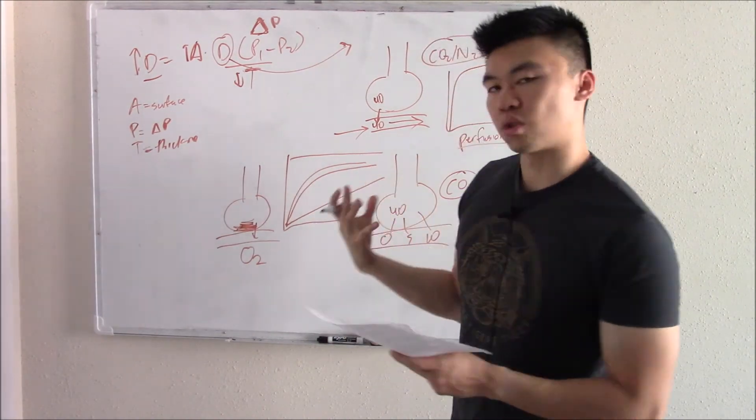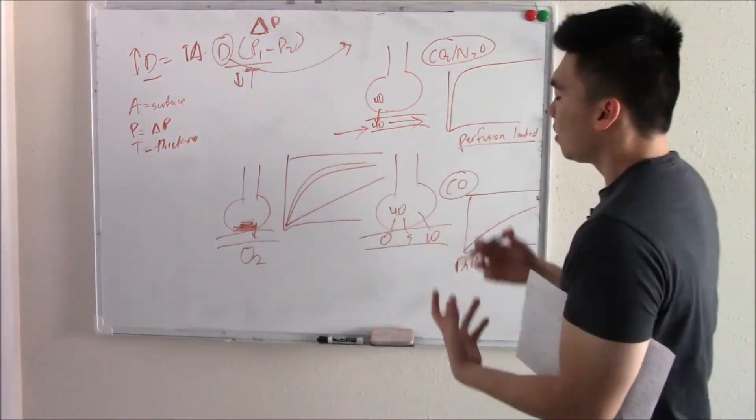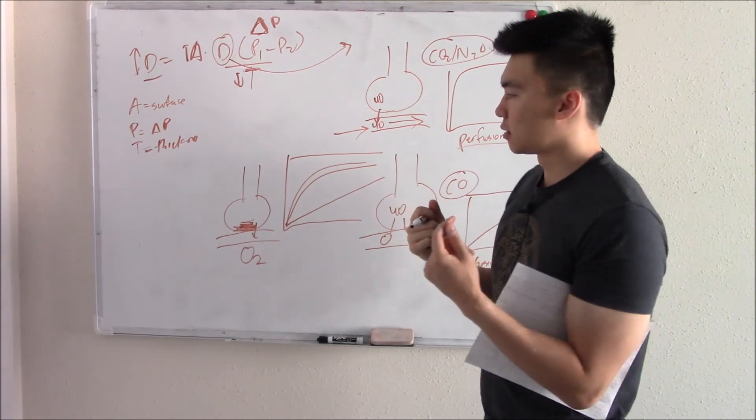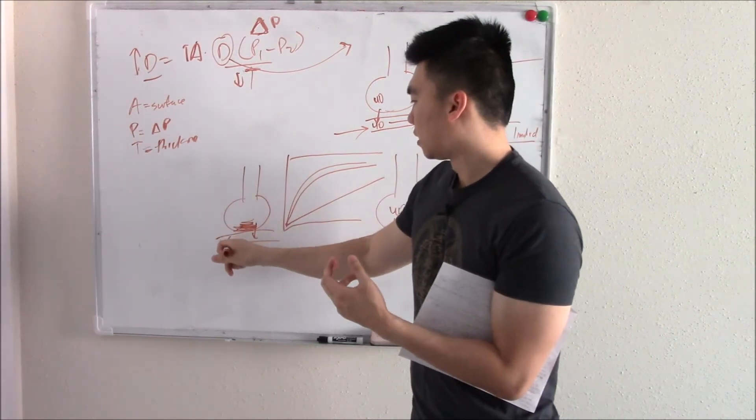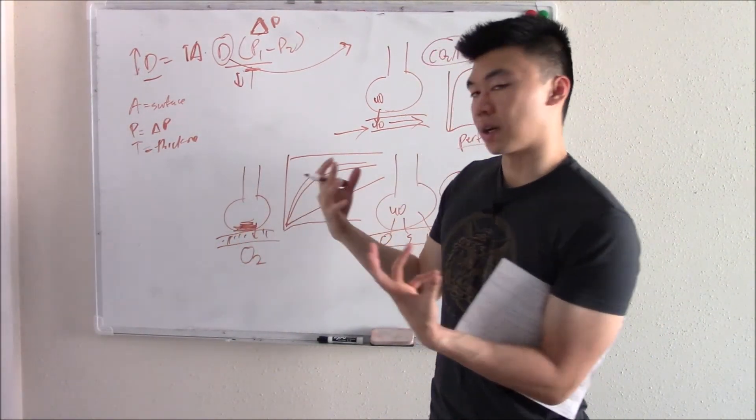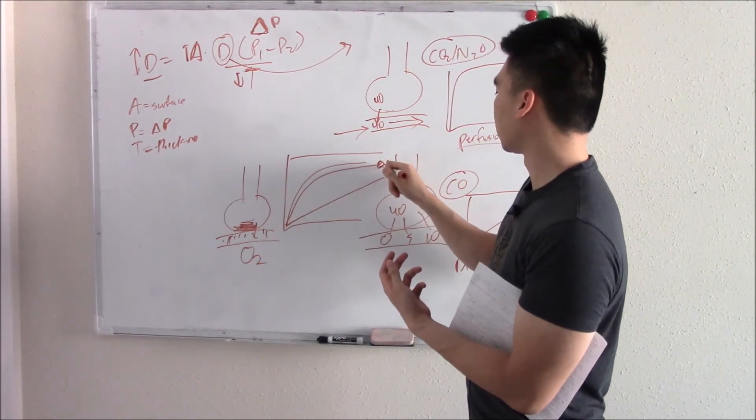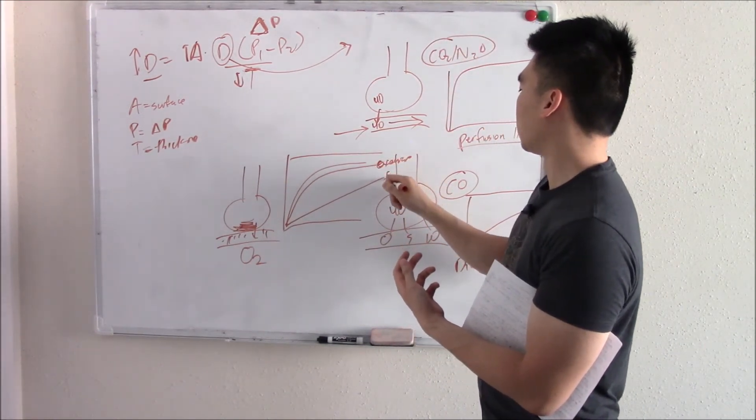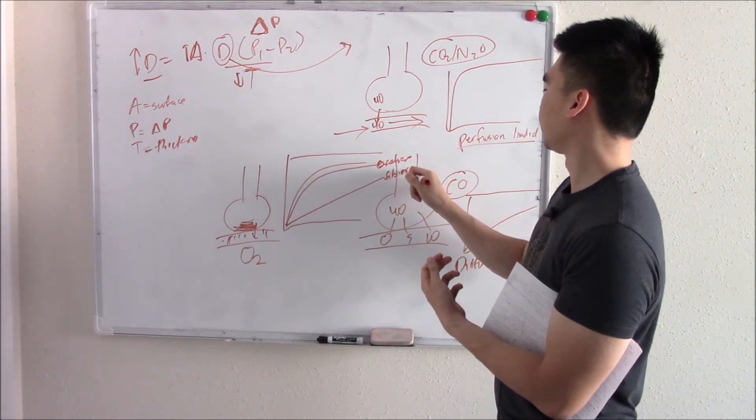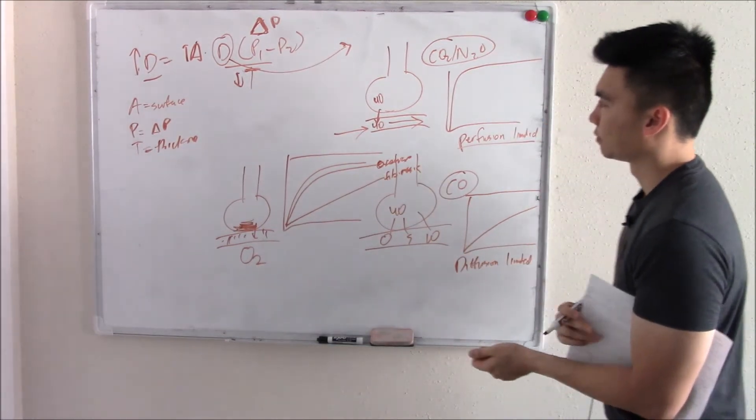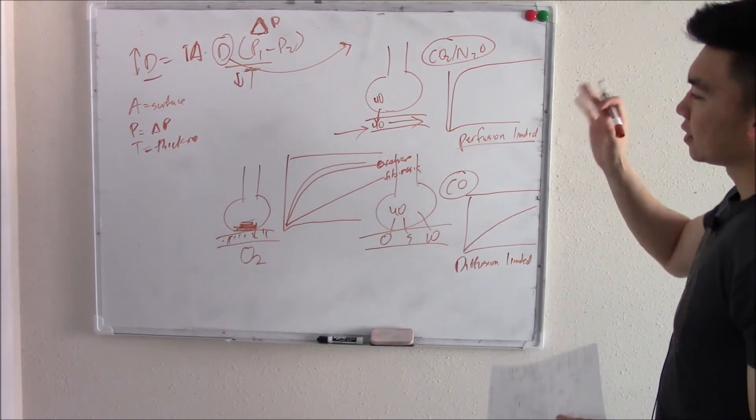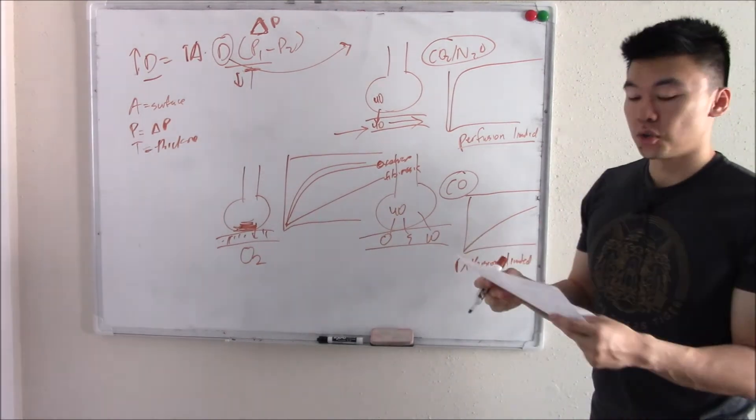Exercise also kind of drops it. Why does exercise drop it? Because your cardiac output increases and there's less time it spends, less time blood spends in here to pick up things, to pick up oxygen. So it kind of decreases. So our exercise, and I write down fibrosis. That is the factors that play into diffusion.